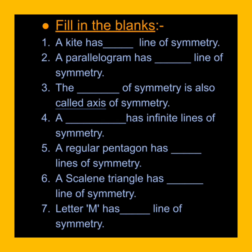Now, fill in the blanks. First one: a kite has blank line of symmetry — a kite has one line of symmetry. Number two: a parallelogram has blank line of symmetry — a parallelogram has no line of symmetry. Third one: the blank of symmetry is also called the axis of symmetry — the answer is 'line'. The line of symmetry is also called the axis of symmetry.